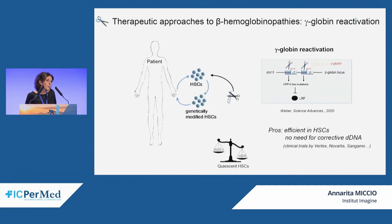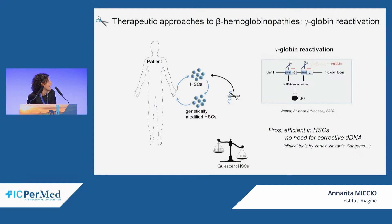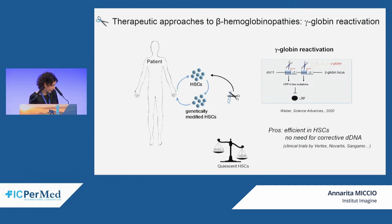A second strategy to reactivate fetal gamma-globin uses the CRISPR-Cas9 nuclease system to evict the LRF transcriptional repressor from the gamma-globin promoter by deleting its binding site, mimicking the effect of HPFH mutations. This strategy also takes advantage of the NHEJ pathway, which is highly active in hematopoietic stem cells, so no donor DNA template is needed. Some ongoing trials are also testing this very similar strategy.